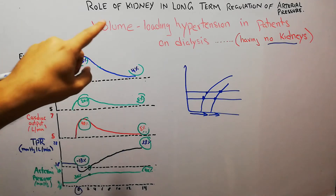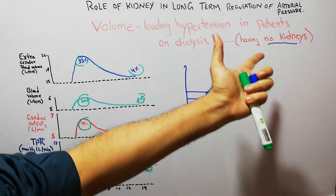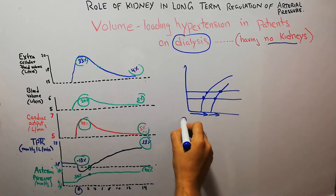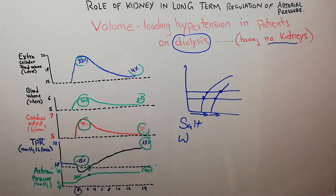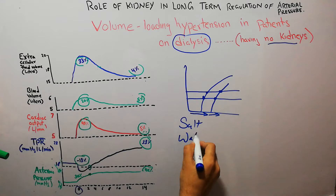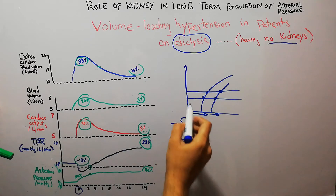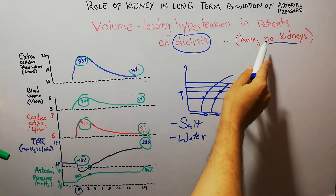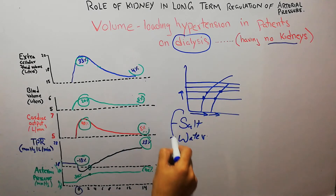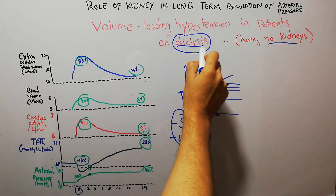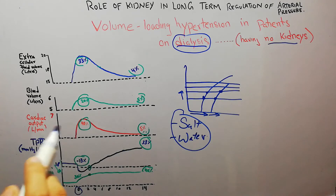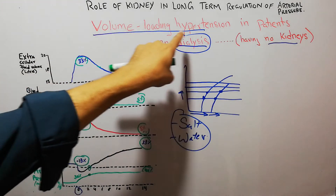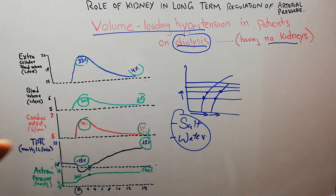If a patient has no functional kidneys and is dependent on artificial kidneys or dialysis, it is important to regulate the amount of salt and water. If salt and water keeps accumulating and is not properly regulated with the help of dialysis, volume loading hypertension will occur. The sequence of volume loading hypertension in these patients is exactly the same as previously discussed.